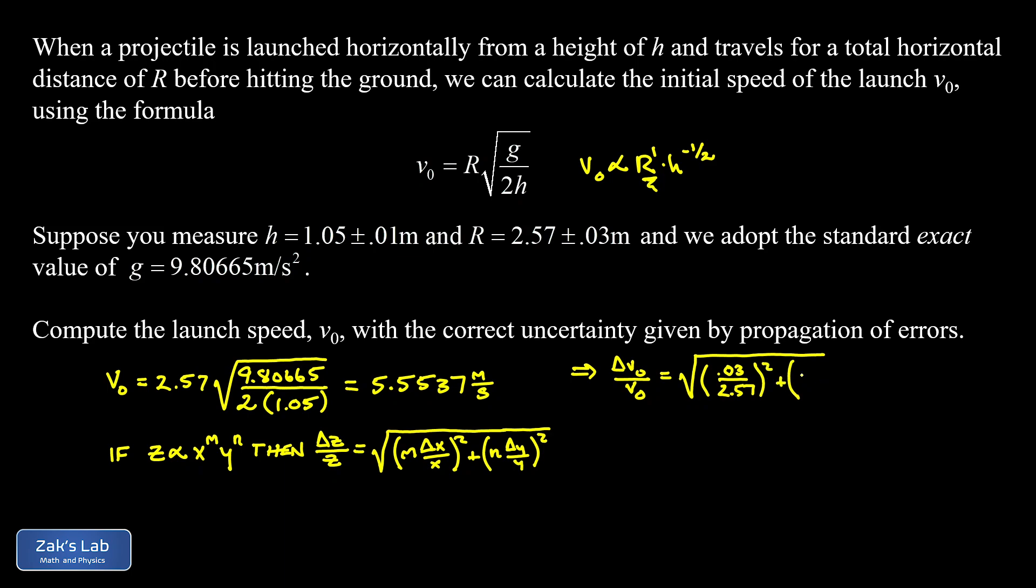And then for my h term, I had an exponent of negative one-half. Well, the minus sign doesn't matter, because when I square it, I'm going to get a positive contribution. So I'm just going to write one-half out in front. And then my delta h was 0.01, and h itself was 1.05, and we square that.